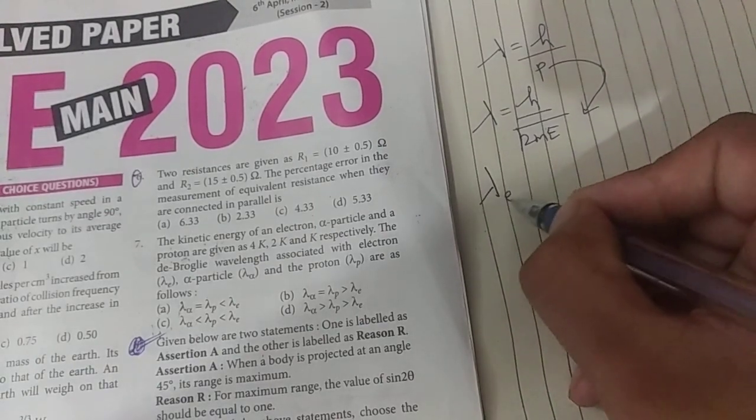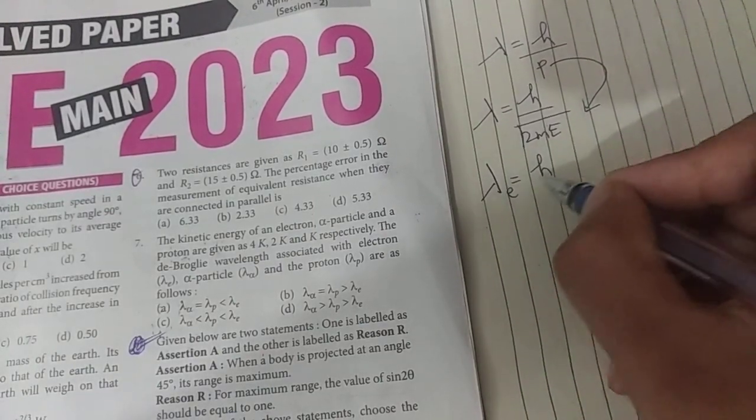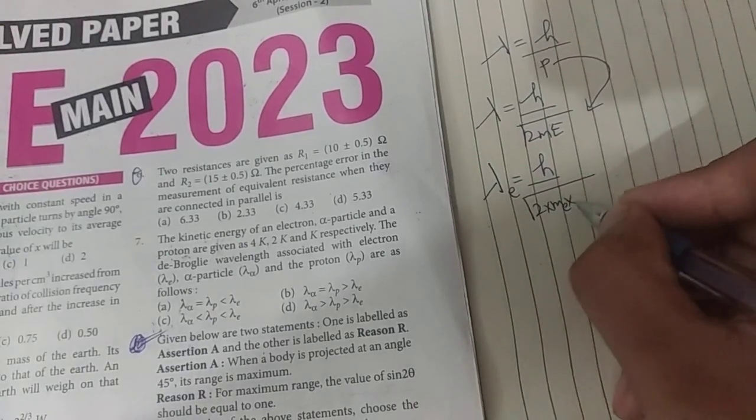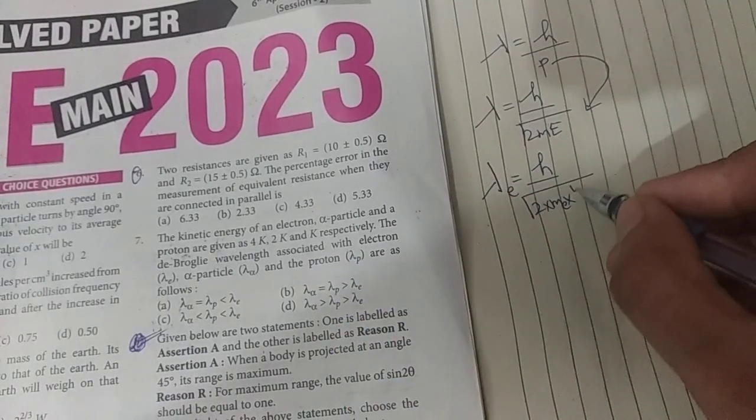So first of all, I will write de Broglie wavelength for electron. That is lambda is equal to h upon root 2 into mass of electron multiplied by kinetic energy 4k.